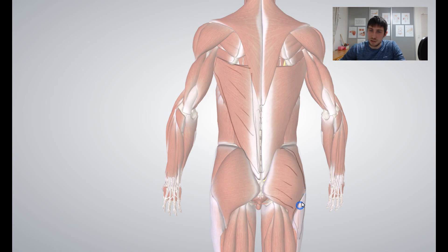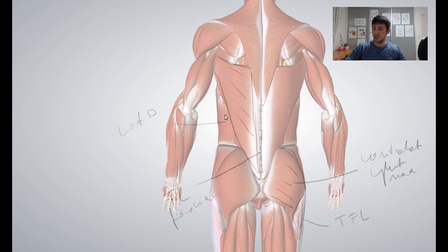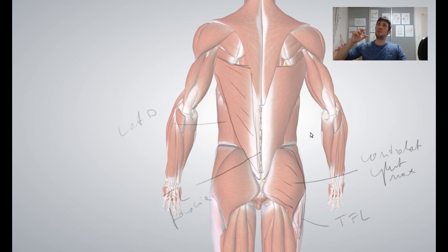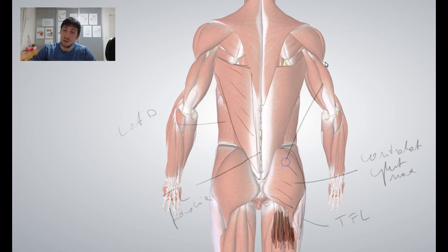These muscles are usually underused. They are large and powerful, but if the balance is off — for example if the anterior oblique system is overpowering the posterior oblique system — the gluteal muscles become so inhibited that they underperform, and the hamstrings start to take over. This is a major problem for many athletes: gluteal amnesia.